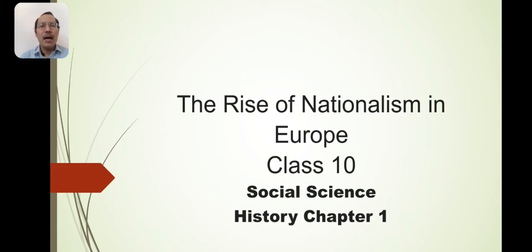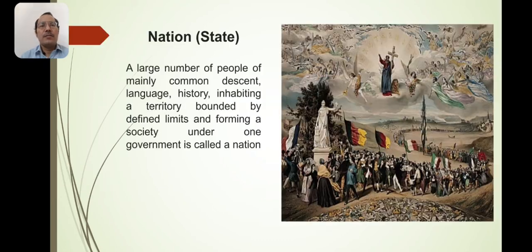We are talking about how nationalism started in a particular region where different fragmented states were in existence, but now we find nationalist nations in existence. A large number of people of mainly common descent, language, or history, inhabiting a territory bounded by defined limits and forming a society under one government, is called a nation.